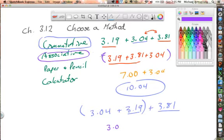Grouping symbols, right? We don't need those there. And so 3.04 plus, and then put the 3.19 plus 3.81 together in the parentheses, and then it helps you know that you can do this one first. So that's the associative property.